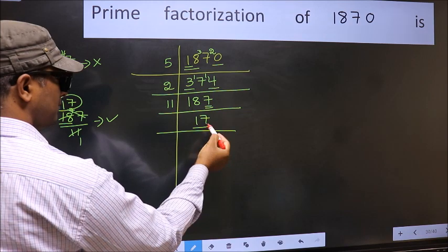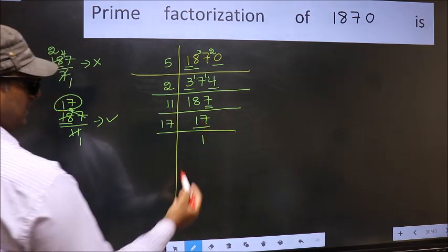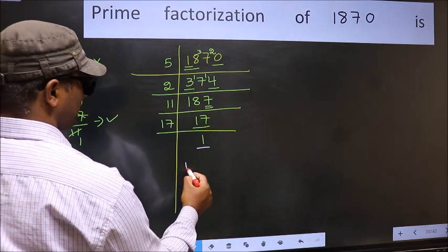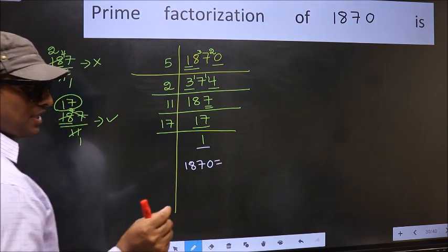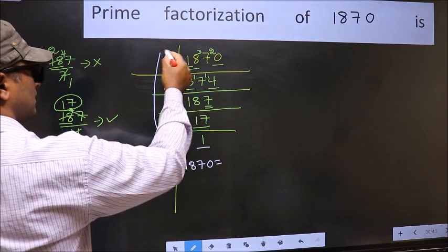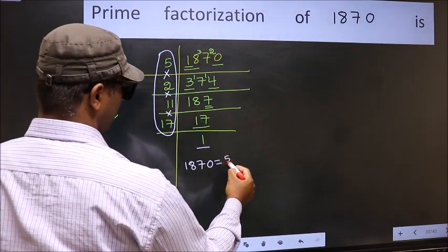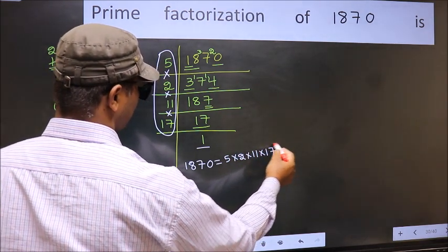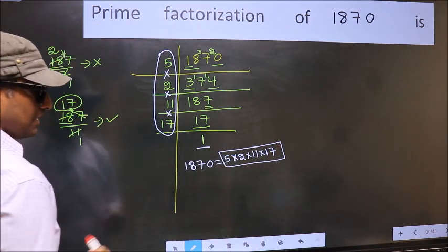Now we have 17. 17 is a prime number, so 17×1 = 17. So we got 1 here. So the prime factorization of 1870 is the product of these numbers: 5 × 2 × 11 × 17. This is the prime factorization of 1870.